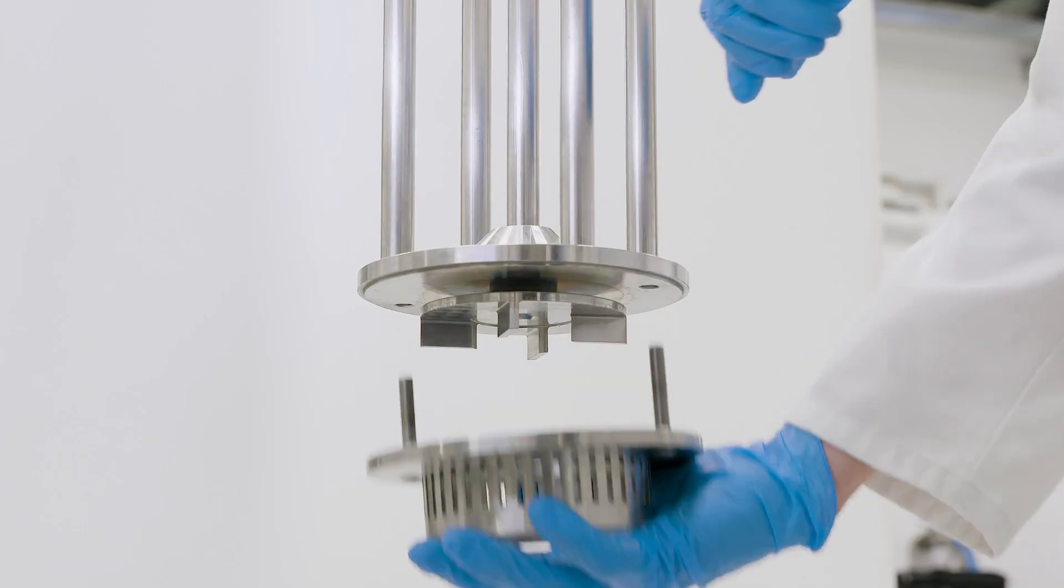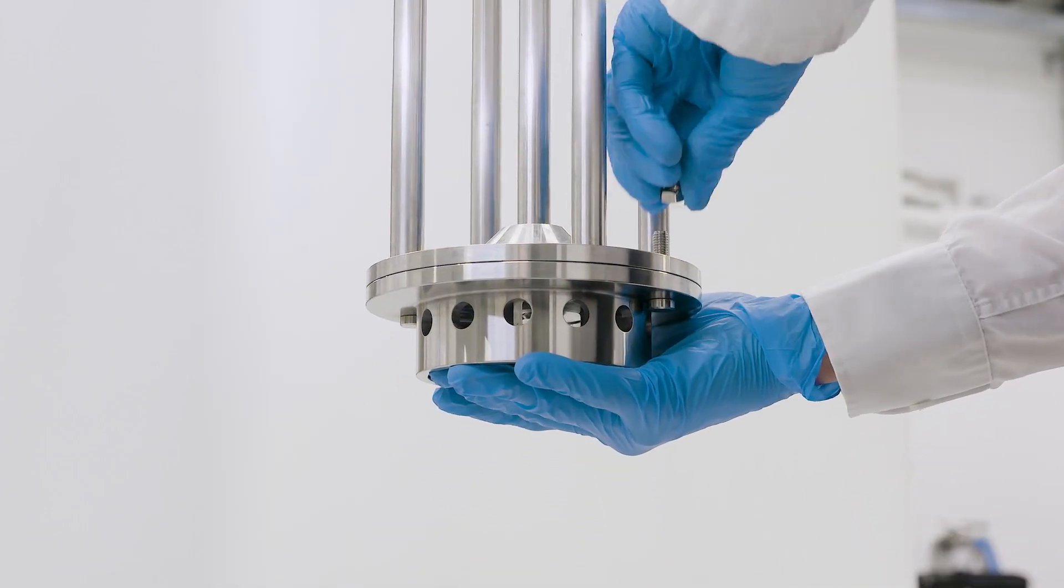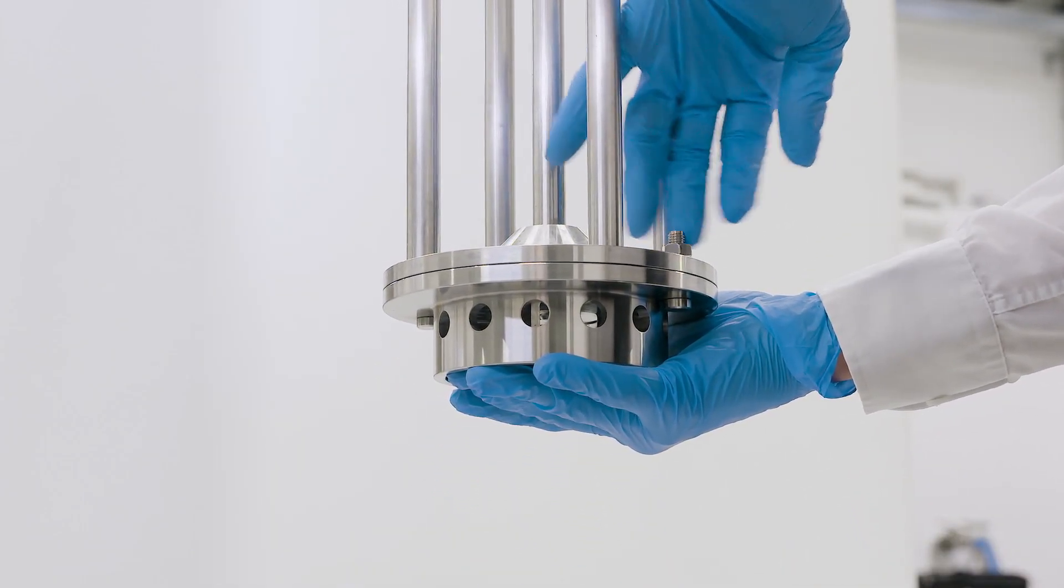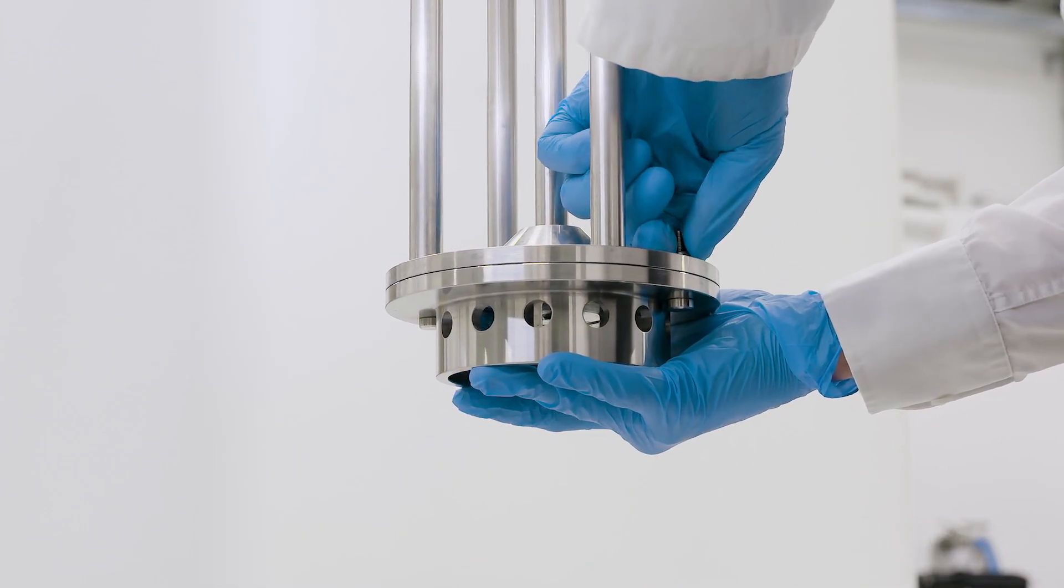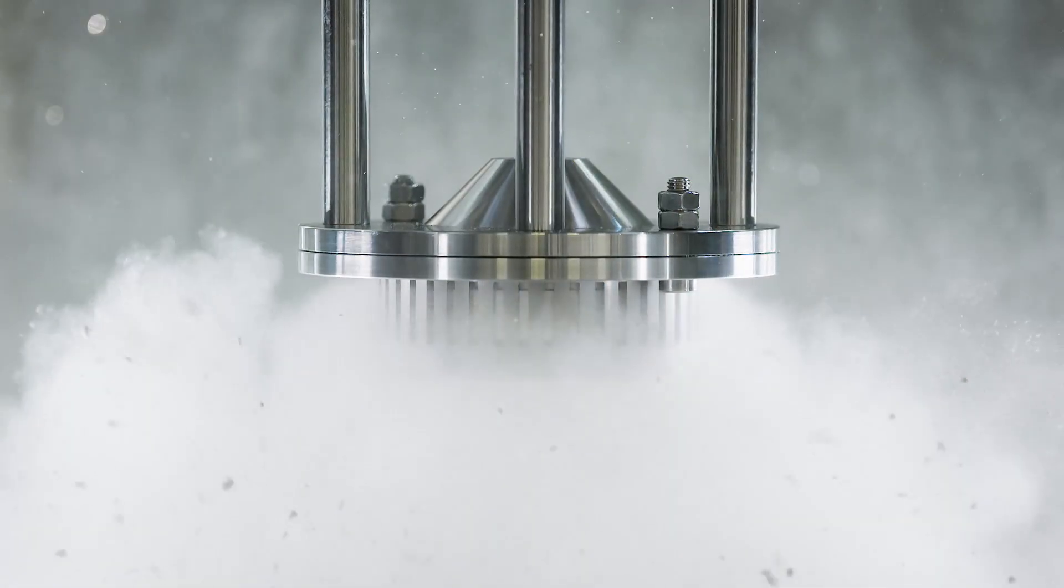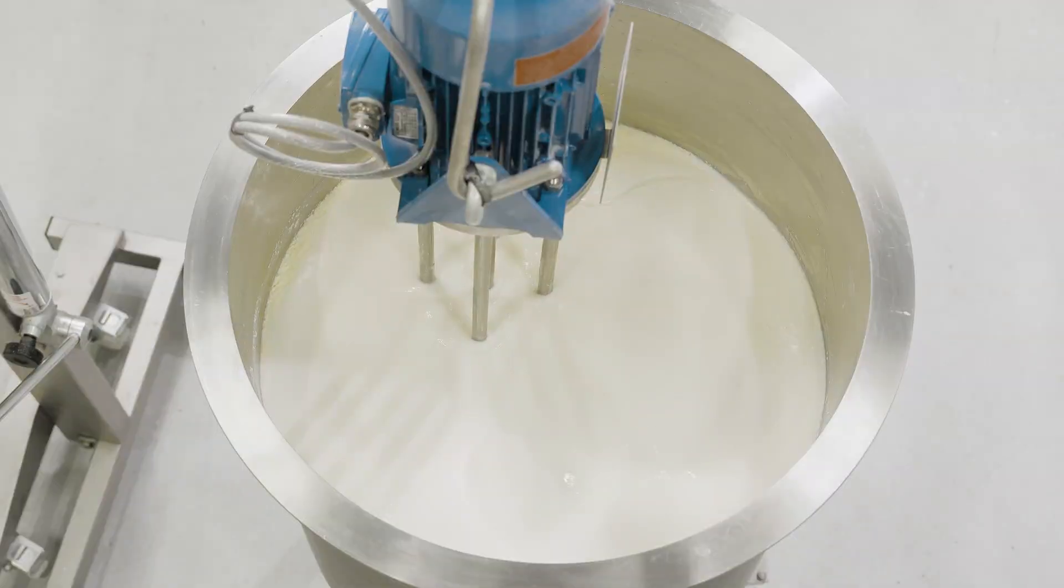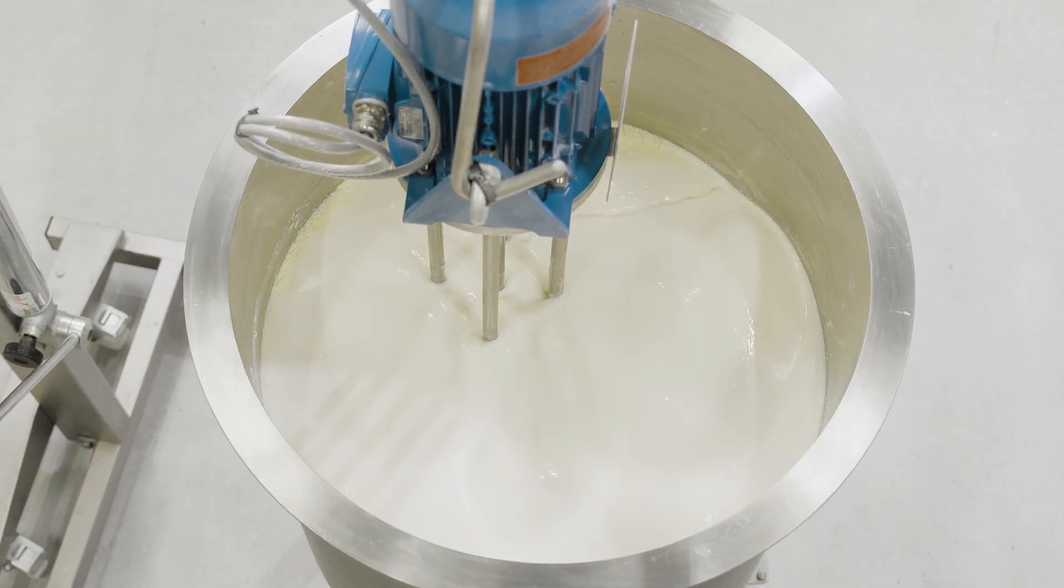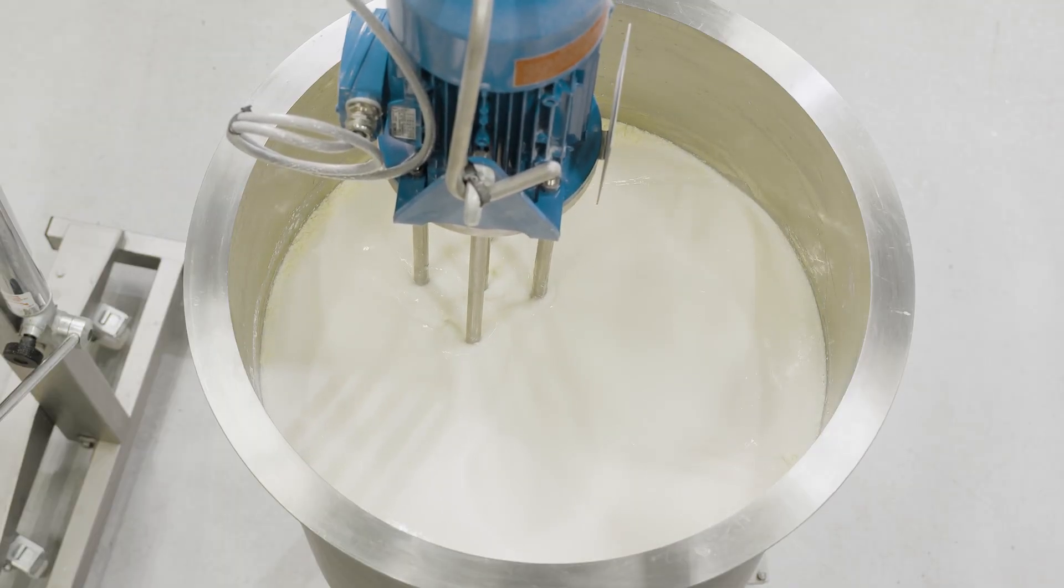Easily interchangeable workheads and screens allow a single mixer to disintegrate, dissolve, and homogenize at the same time, as well as form stable emulsions and disperse difficult powders such as gums and thickeners. This allows the machine to operate far beyond the capabilities of a conventional agitator.